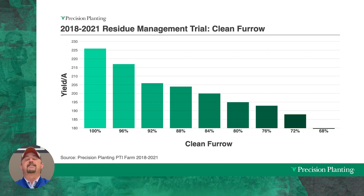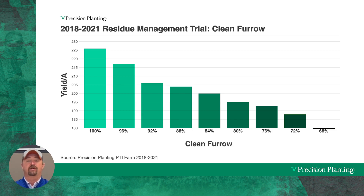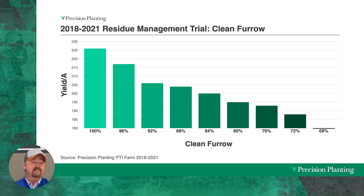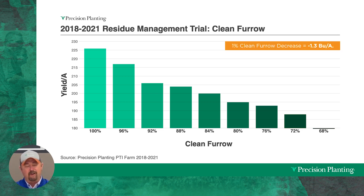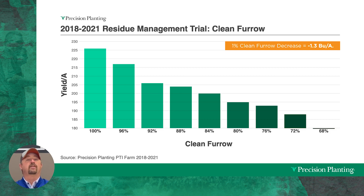So let's look at some data. One of the things we've done at the PTI farm is we've conducted a clean furrow study that involves manual inoculation of residue to understand how much residue is going to affect yield and how much yield loss that is. This is a multi-year study — we've done this from 2018 to 2021. What we found is for every 1% of clean furrow decrease, we found a 1.3 bushel loss in corn.